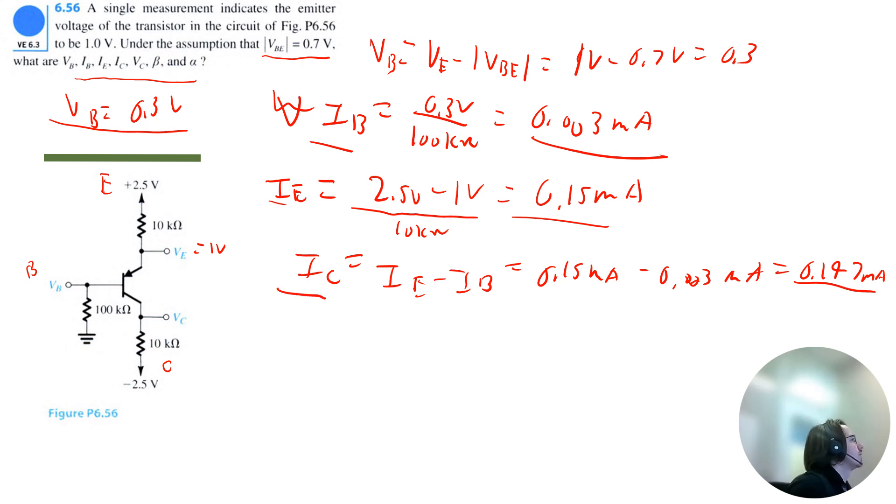Okay, next we have collector voltage. If we travel upward from the circuit, that would be negative 2.5 volts plus the collector current of 0.147 milliamps. So I get that the collector voltage is negative 1.03 volts.